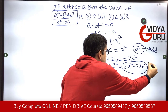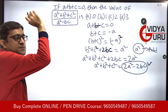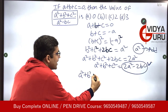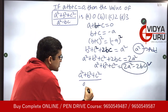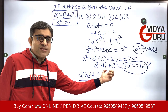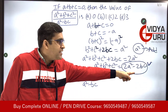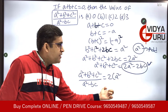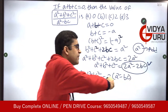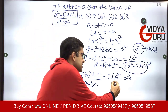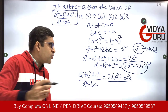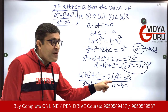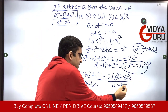Now we use this value in the original expression. The numerator a² + b² + c² equals 2a² - 2bc, which can be written as 2(a² - bc) by taking 2 as common. The denominator is a² - bc. So (a² - bc) cancels from numerator and denominator.